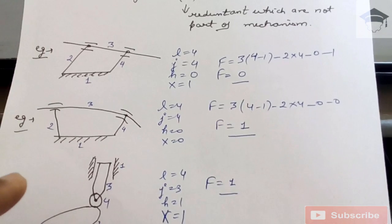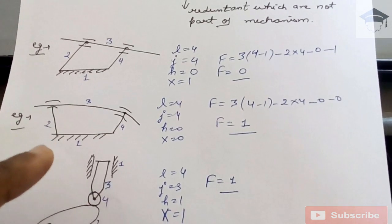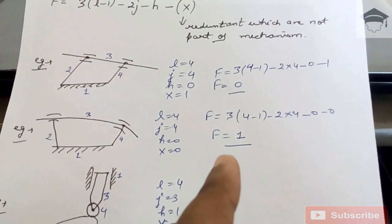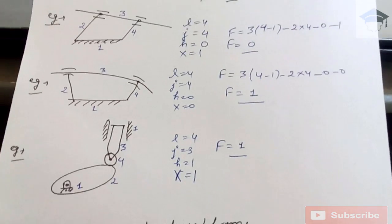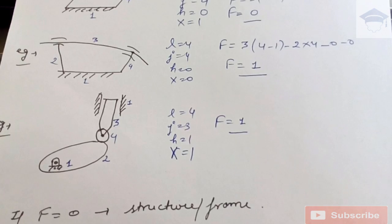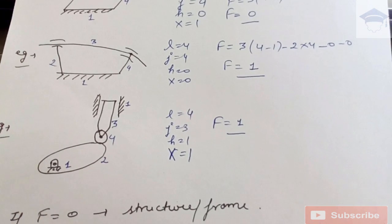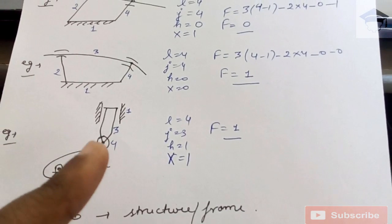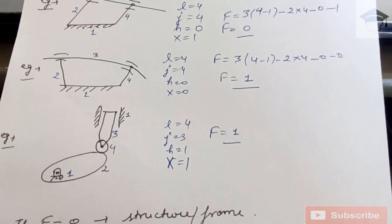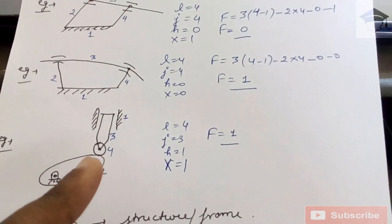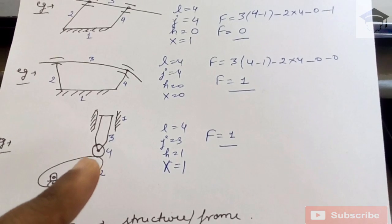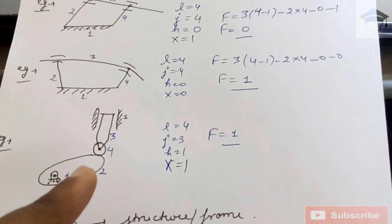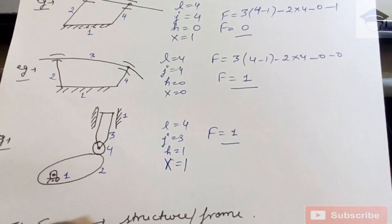Example 3 is a cam and follower mechanism. There are four links: one, two, three, and four, where one is the fixed link. At the contact between links two and four — the cam and roller — there is point contact. So l = 4. The joints are: link one and two (one joint), link two and four (point contact), link three and four (one joint), and link one and three (sliding joint), giving j = 3 and h = 1.